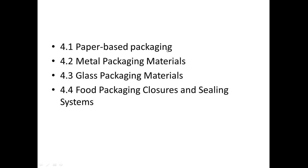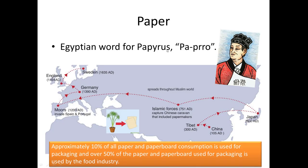The word 'paper' has been derived from the Egyptian word Papyrus or Papyro, because the first paper was developed by Egyptians from the plant Papyrus. However, that was not a scientific method. The actual credit goes to a Chinese administrator named Cai Lun, who developed paper in China in 105 AD.